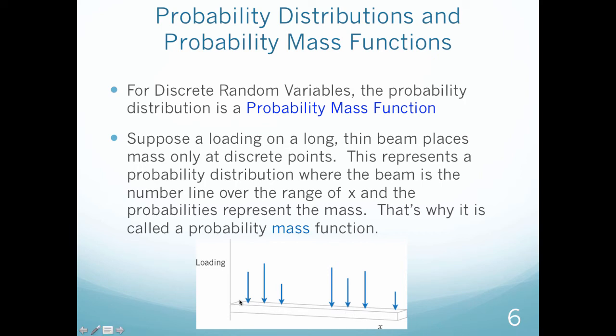And the probabilities represent the mass. So here I have these loads, or these forces, or this mass that are actual probabilities. That's why it's called a probability mass function. I have these x values, and see how these are kind of different heights? Those are my probabilities. So they're distributed evenly along these x values.